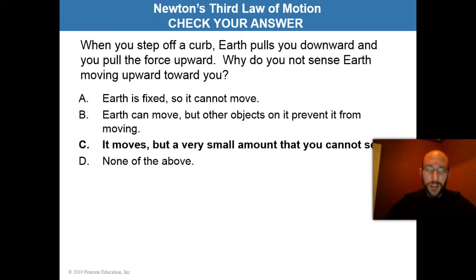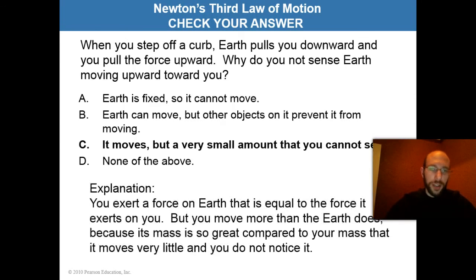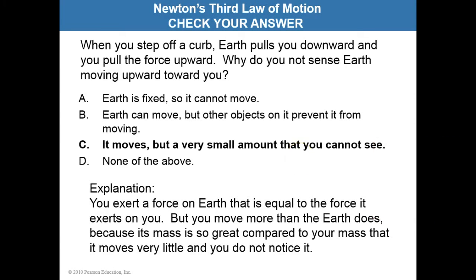Actually, when the lemon crashes into the wall, it also moves the wall a slight amount — but such a very small amount that you can't see it. Why can't you see it? That answer has to do with inertia. The mass of the earth is so great compared to your own mass that the earth doesn't respond very much to the force you're exerting on it — it resists motion a great deal more than you do. Same with the lemon and the wall: the lemon's mass is very small compared to the wall's, so even though the lemon exerts a force on the wall, the wall doesn't move much — it has a lot more inertia than the lemon does.